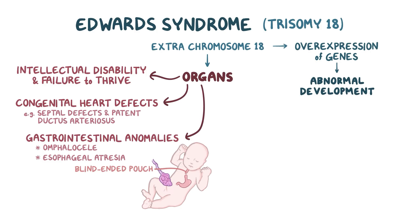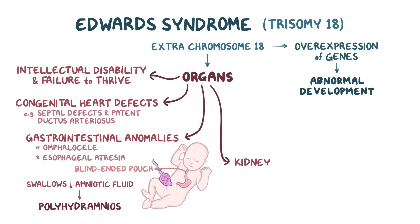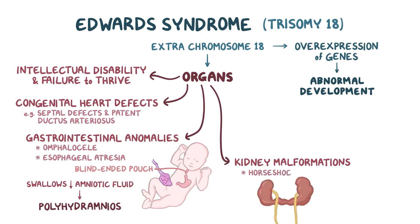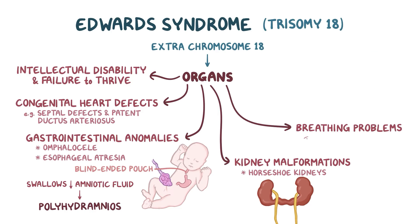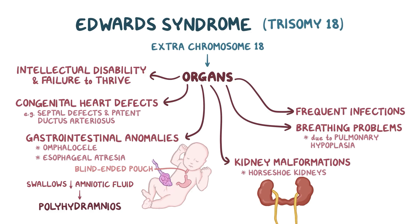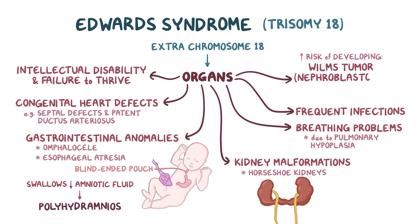With esophageal atresia, the fetus swallows less amniotic fluid because the fluid has nowhere to go, which leads to polyhydramnios — meaning more fluid sticks around in the amniotic sac. Other complications include kidney malformations like horseshoe kidneys, where the two kidneys fuse together during fetal development resulting in one horseshoe-shaped kidney, breathing problems due to pulmonary hypoplasia, and frequent infections. Finally, babies with Edwards syndrome have increased risk of developing Wilms tumor, or nephroblastoma, which is a type of kidney tumor, and hepatoblastoma.